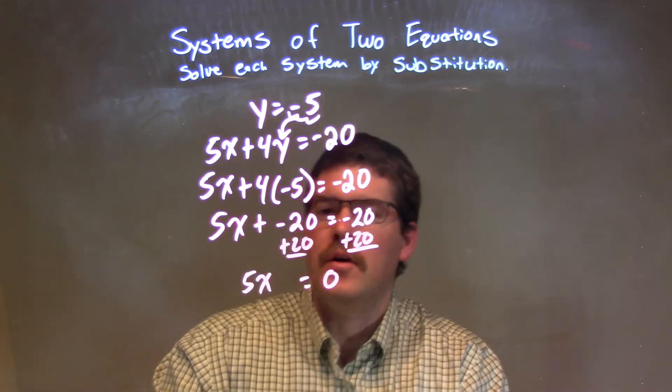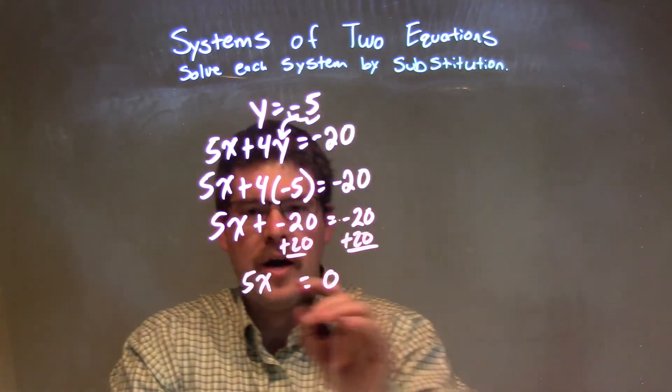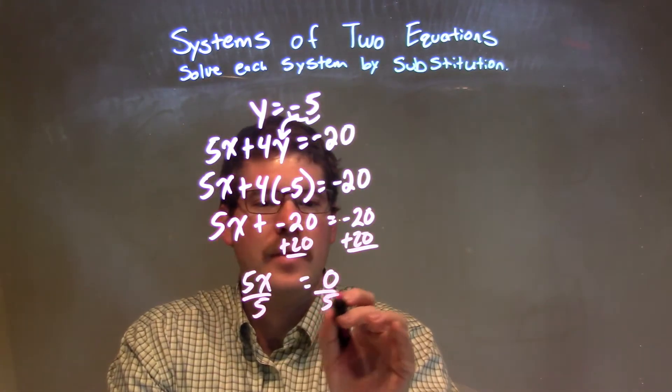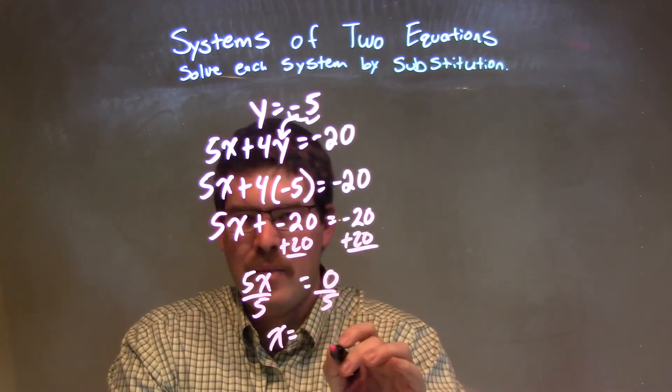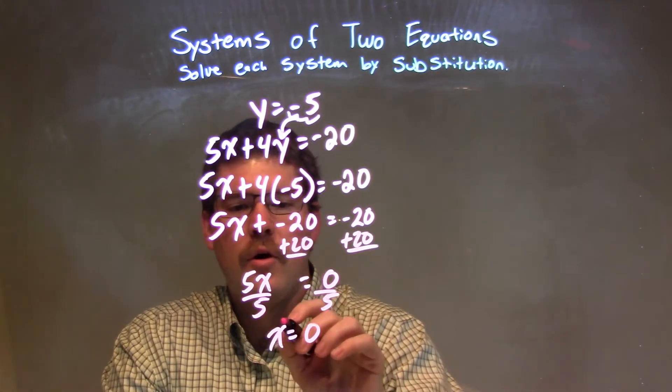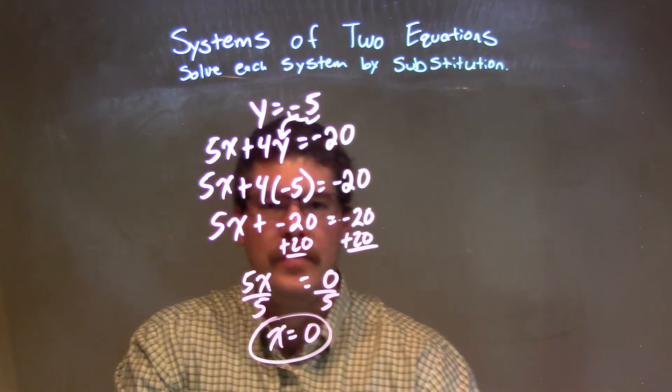So, we have 0 right there. So, I have 5x equals 0. Divide both sides by 5. And I have x equals 0 divided by 5, which is 0. So, our x value here is just 0.